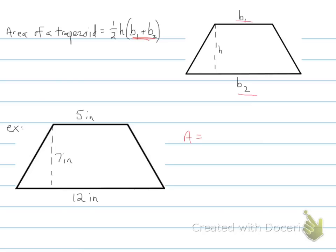So area is equal to one-half times the height times 5 plus 12. So we do our PEMDAS and add up this first. So area is equal to 7 times 17, and all that divided by 2.